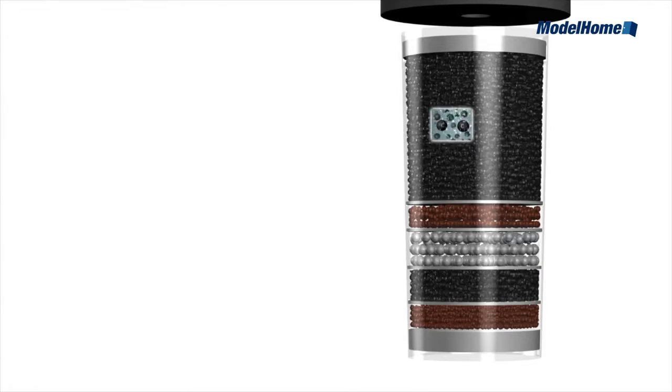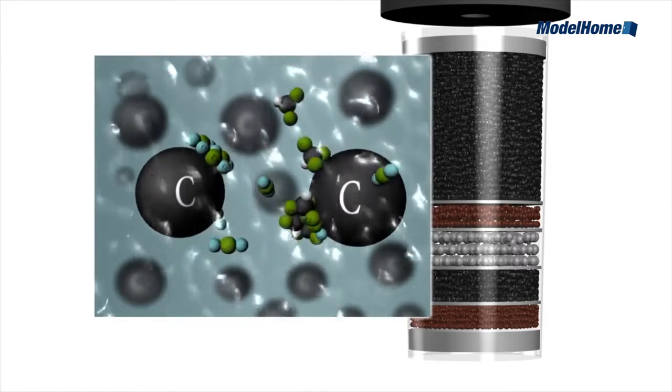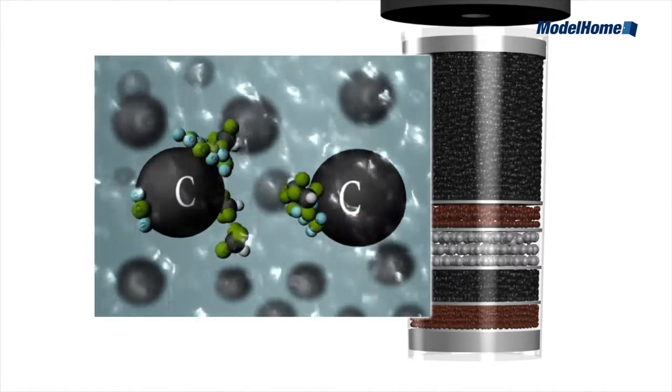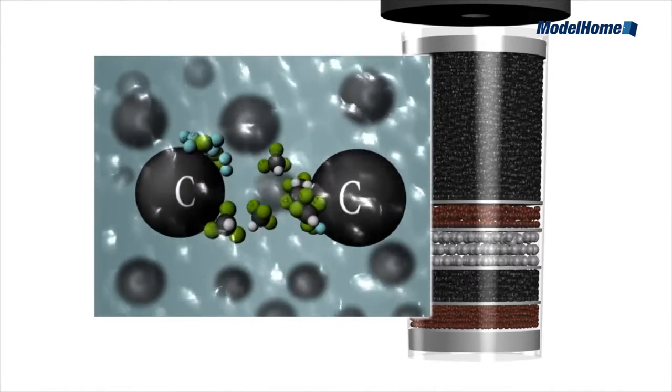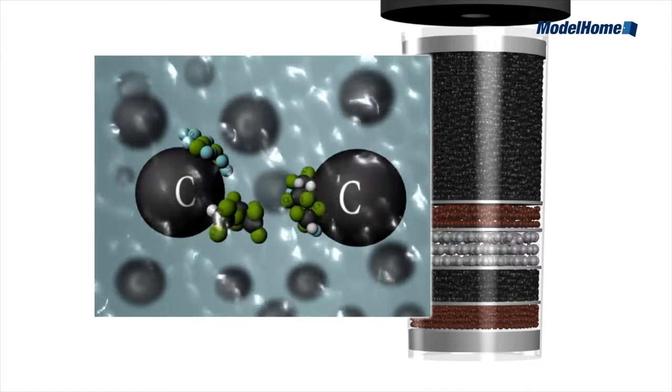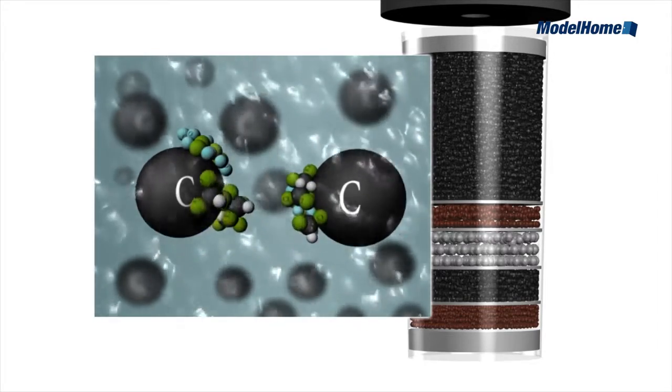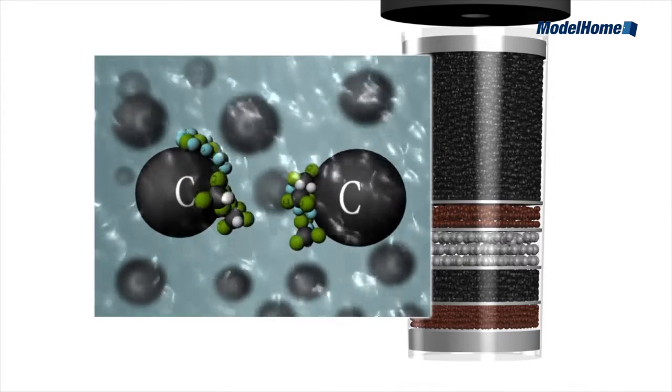Shredded coconut shell covered with silver activated carbon removes chlorine, trihalomethanes which are byproducts of chlorine addition and can be linked to cancer, organic minerals, and unwanted smells and tastes. The result is fresh, pure and soft water.